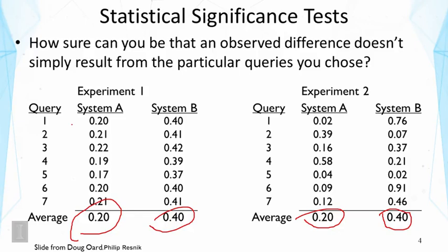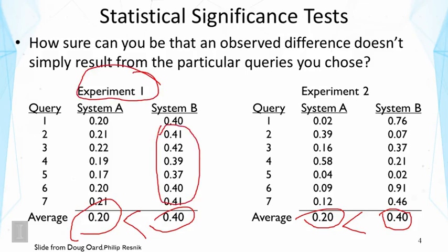If you look at the mean average precision, we can easily say that System B is better — after all it's 0.4, which is twice as much as 0.2. But if you look at the two experiments in detail, you will see that we'd be more confident in Experiment 1, because those numbers seem to be consistently better for System B.